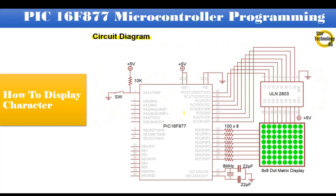Here is the circuit diagram. PIC16F877 microcontroller pin number 1 is master reset — pressing the switch will reset the microcontroller. Port C is interfaced with the dot matrix display rows through ULN2803 IC. Port D is interfaced with the dot matrix display columns through current limiting resistors of 100 ohm. Pin numbers 13 and 14 are interfaced with an 8 MHz crystal and 22 pF capacitors. We are using an 8x8 dot matrix display. Pin 11 and 32 are connected to positive 5 volts, and pins 12 and 31 are connected to ground. Let's draw this circuit in Proteus.